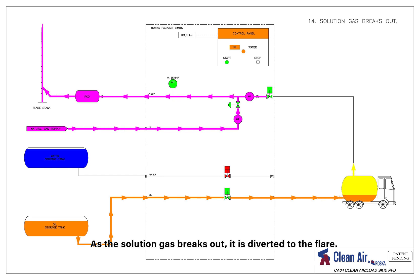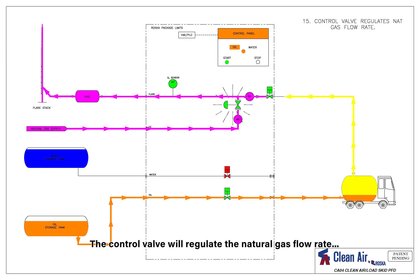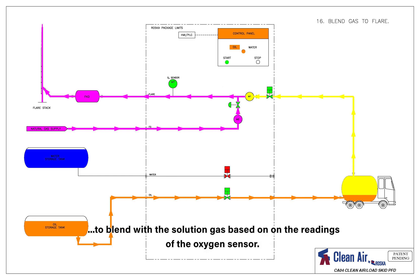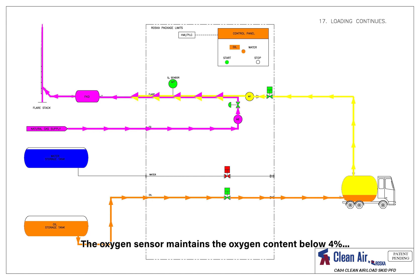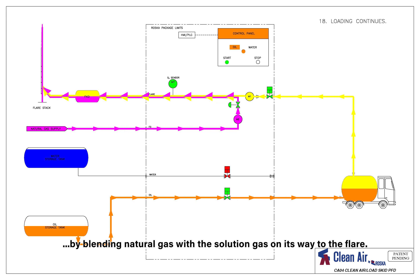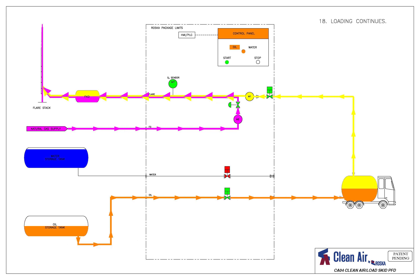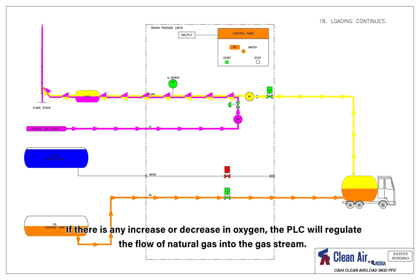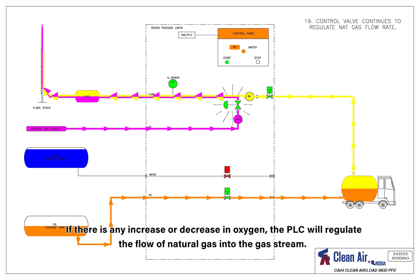As the solution gas breaks out, it is diverted to the flare. The control valve will regulate the natural gas flow rate to blend with the solution gas based on the readings of the oxygen sensor. The oxygen sensor maintains the oxygen content below 4% by blending natural gas with the solution gas on its way to the flare. If there is any increase or decrease in oxygen, the PLC will regulate the flow of natural gas into the gas stream.